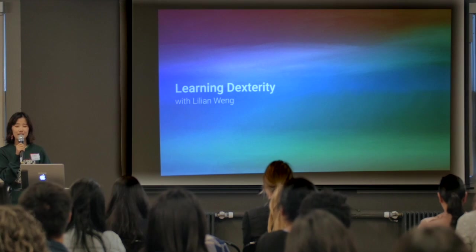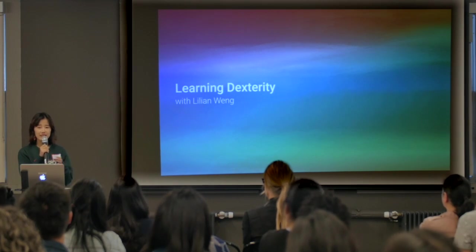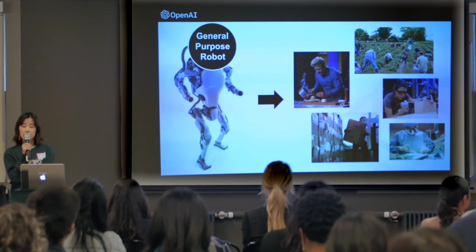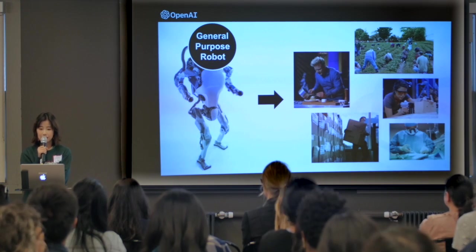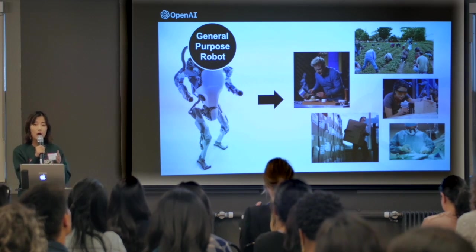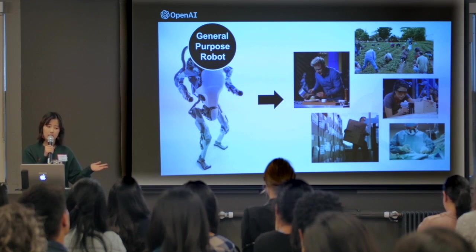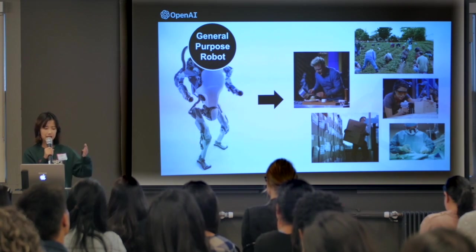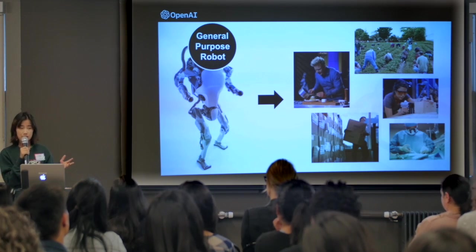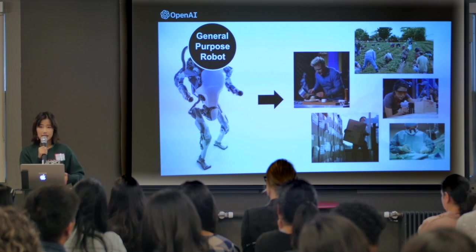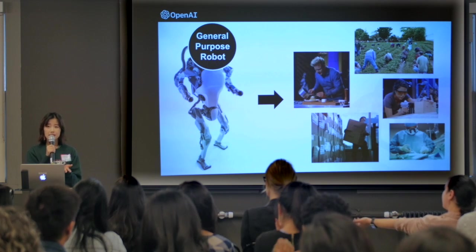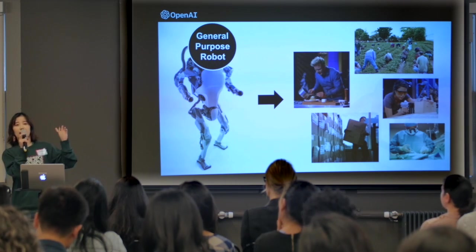Today I'm going to talk about some research projects we did at the OpenAI Robotics team. One big picture problem is to develop the algorithm to power a general purpose robot. If you think about how we humans live in this world, we can cook, we move stuff, we use different tools. We fully utilize our body and especially our hands to do a variety of tasks. So to some extent we are general purpose robots.